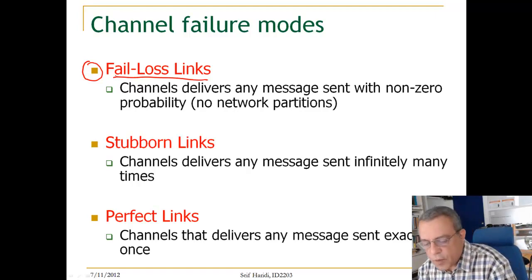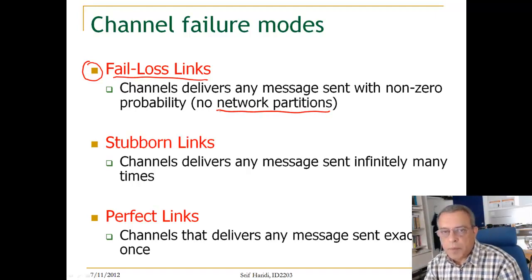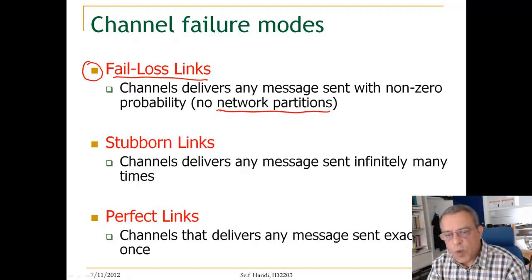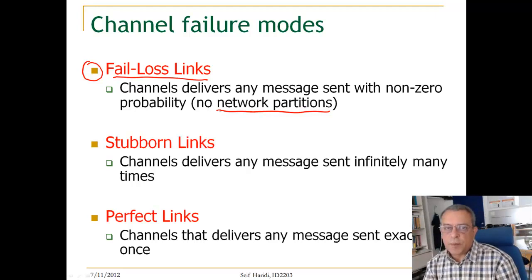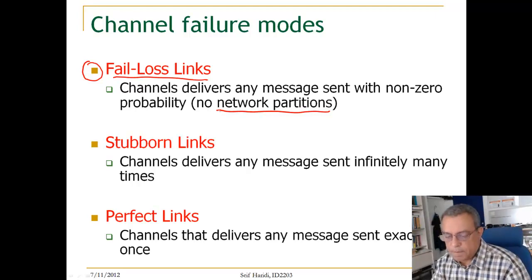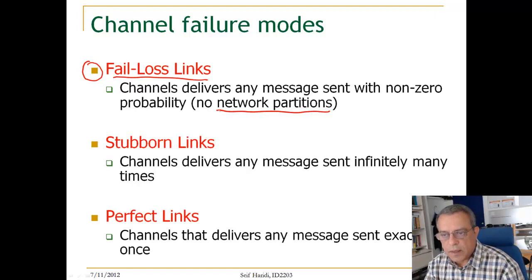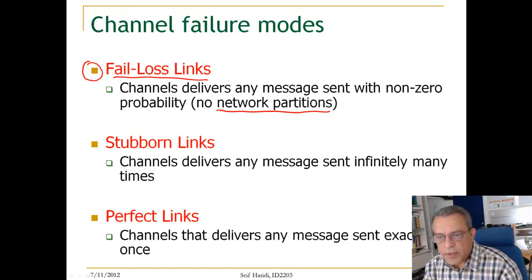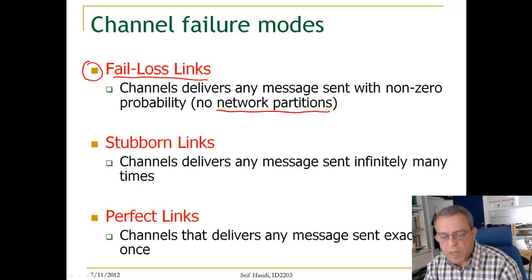We distinguish this from network partitioning. Network partitioning is a situation where the network systematically drops all messages. We will discuss network partitioning later in this course in certain algorithms. A fair loss link is modeling the internet's lowest layer of communication — the UDP layer. Using UDP packets, a packet may arrive or may be lost.